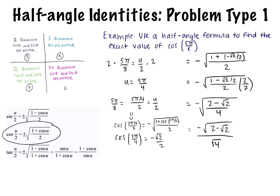Using the properties of radicals, we can separate the numerator and denominator into separate square roots, which simplifies to negative square root of 2 minus square root of 2 all over 2. This is as simple as this fraction can get. Therefore, cosine of 5π over 8 is equal to negative square root of 2 minus square root of 2 all over 2.